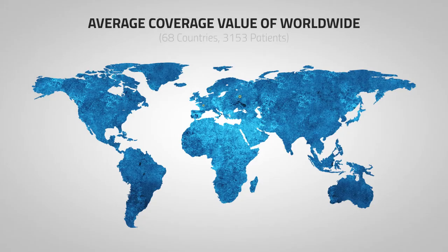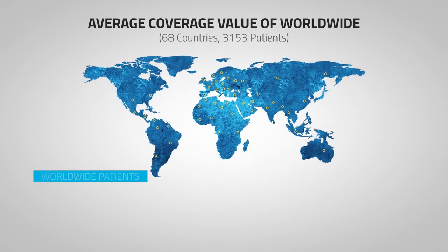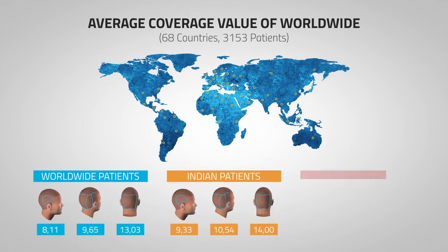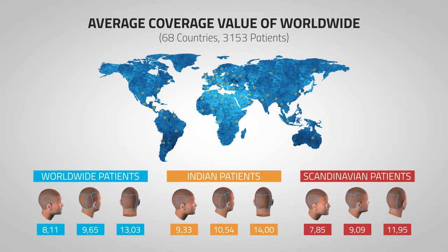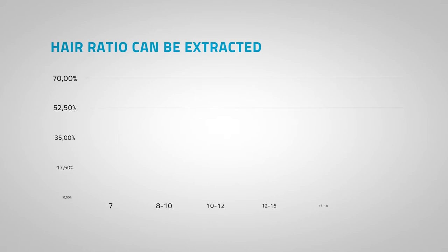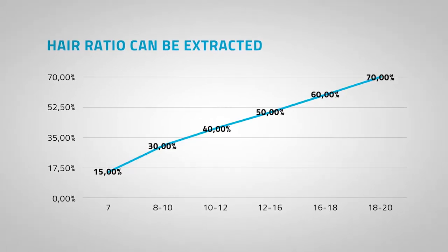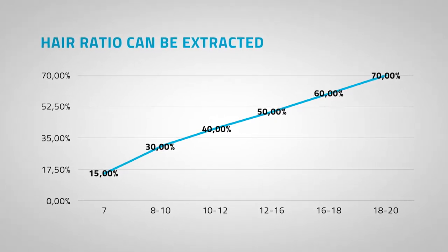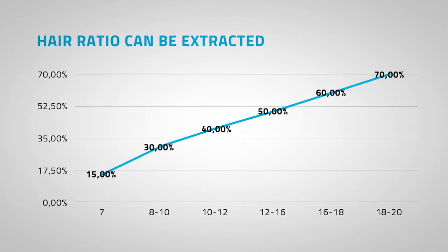In the last five years, I operated on 3,153 patients from 68 different countries and published average coverage values for this worldwide patient population. The highest coverage values come from Indian patients and the lowest from Scandinavian patients. Calculation is the most important factor for the donor harvesting plan: if your coverage value is around 7, you can extract a maximum of 15% of the hair; but if it is around 20 — which is very rare — you can extract up to 70%.